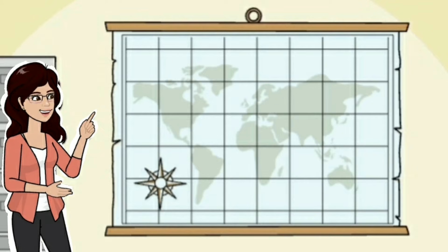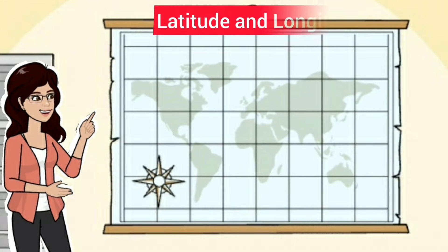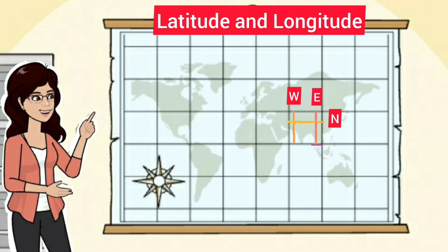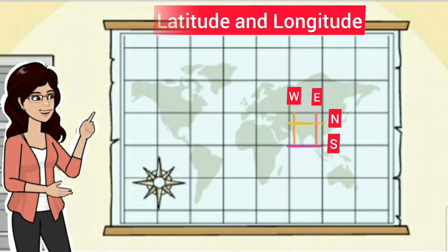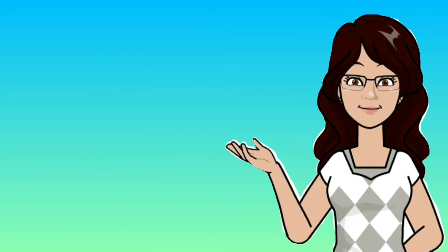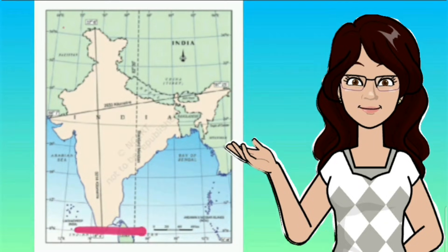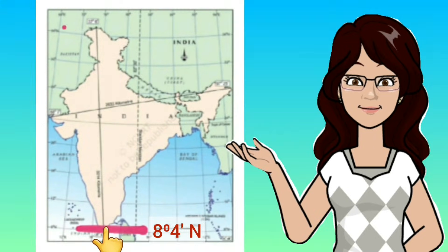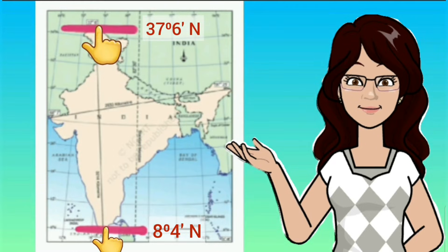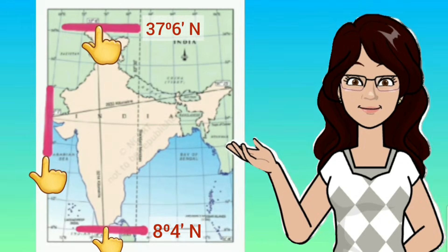To know the exact location you need to find out the latitude and longitude which are touching the easternmost, westernmost, northernmost, and southernmost points of our country. The latitude touching the southernmost point of our country is 8 degrees 4 minutes north, and the northernmost latitude is 37 degrees 6 minutes north.